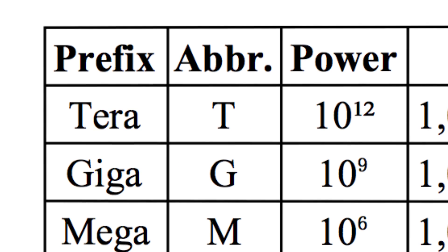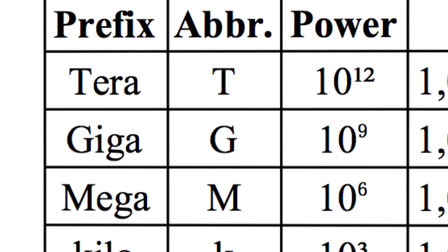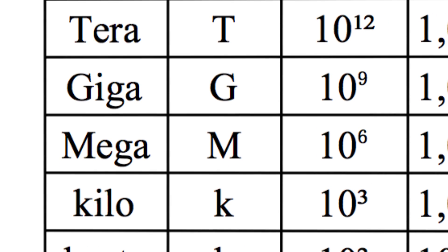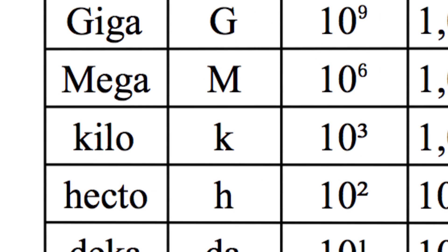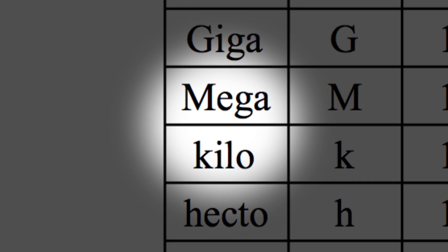You'll notice the powers of those numbers are all multiples of three. Values get abbreviated by shifting the decimal placed over by those multiples of three. For resistors, we mostly use kilo and mega.